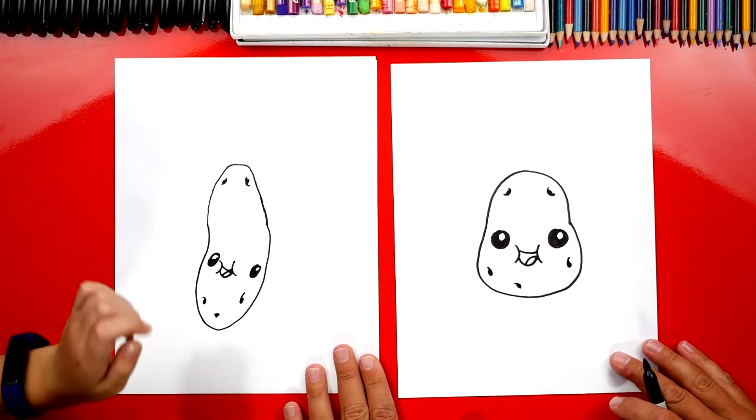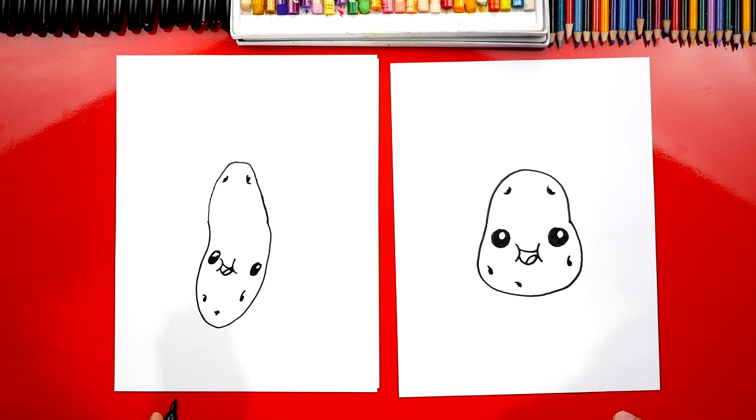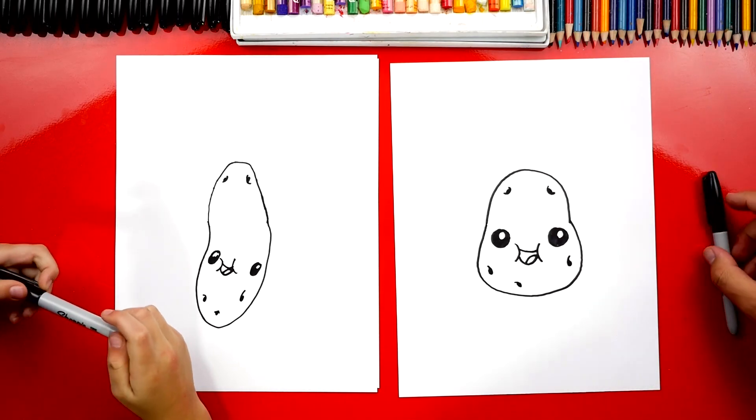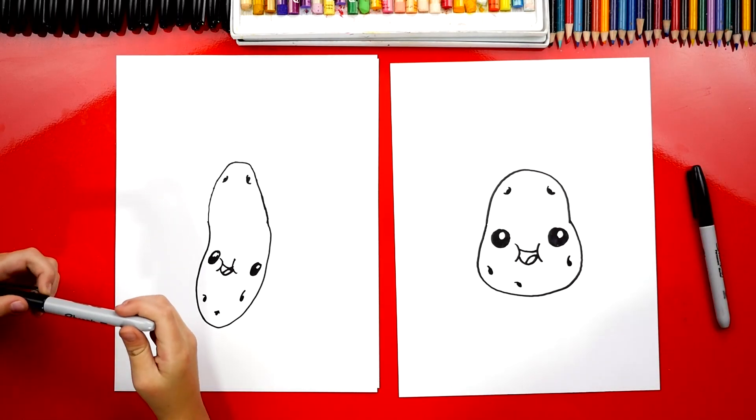All right Austin we did it. We finished our potatoes and they look perfect. Except we're not completely done. What do we still need to do? Color it. Yeah they're gonna look so much better colored in. Now this part we're gonna fast forward but at the end you guys can pause it to match the same color.